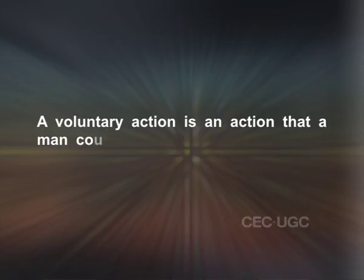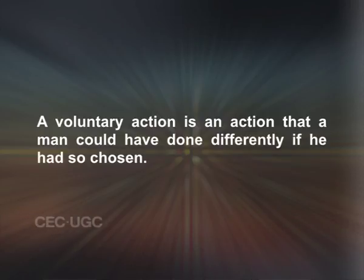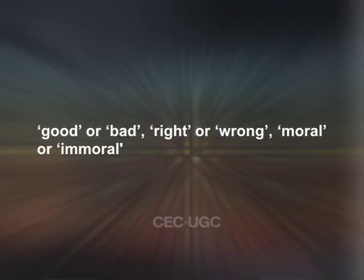Normative sciences deal with values. They give us systematic valuing of our voluntary actions. They do not merely describe the standards by which we judge; they are also concerned with the validity or truth of these standards. Ethics has been defined as the normative science of conduct, and conduct is a collective name for voluntary actions. A voluntary action is an action that a man could have done differently if he had so chosen. Voluntary actions include all willed or volitional actions in which there is a conscious process of willing. There are several terms commonly used in judging human actions by ethical standards. We say that an action is good or bad, right or wrong, moral or immoral.